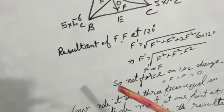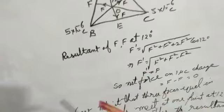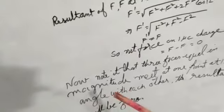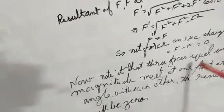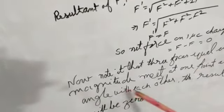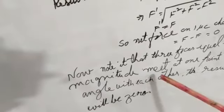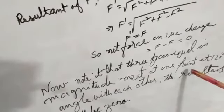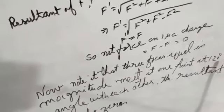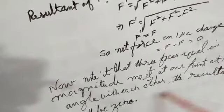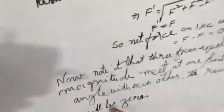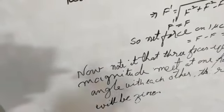Now note - the three forces equal in magnitude meet at one point at 120 degree angle with each other, the resultant will be zero. The resultant will be zero. Yeh question ban gaya hai.